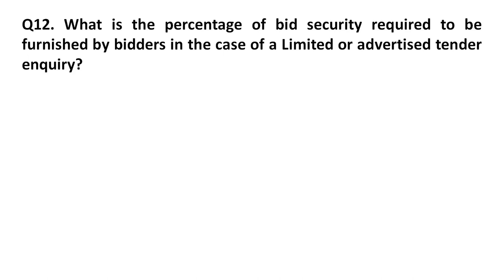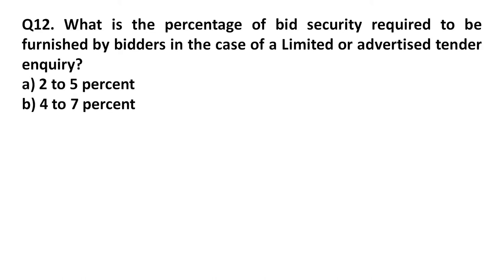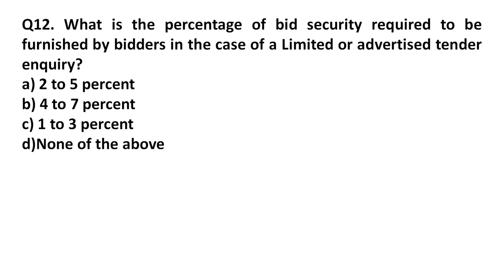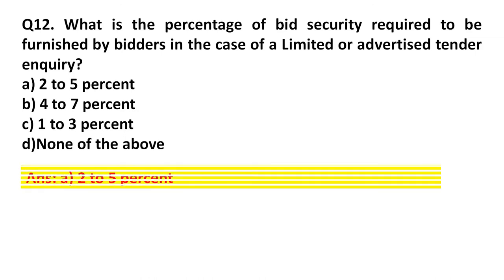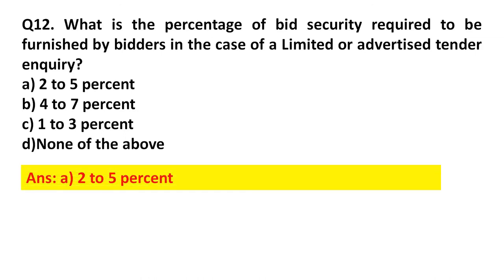Question 12: What is the percentage of bid security required to be furnished by bidders in the case of a limited or open standard inquiry? Option A: 2 to 5 percent. Option B: 4 to 7 percent. Option C: 1 to 3 percent. Option D: None of the above. Answer: Option A, 2 to 5 percent.